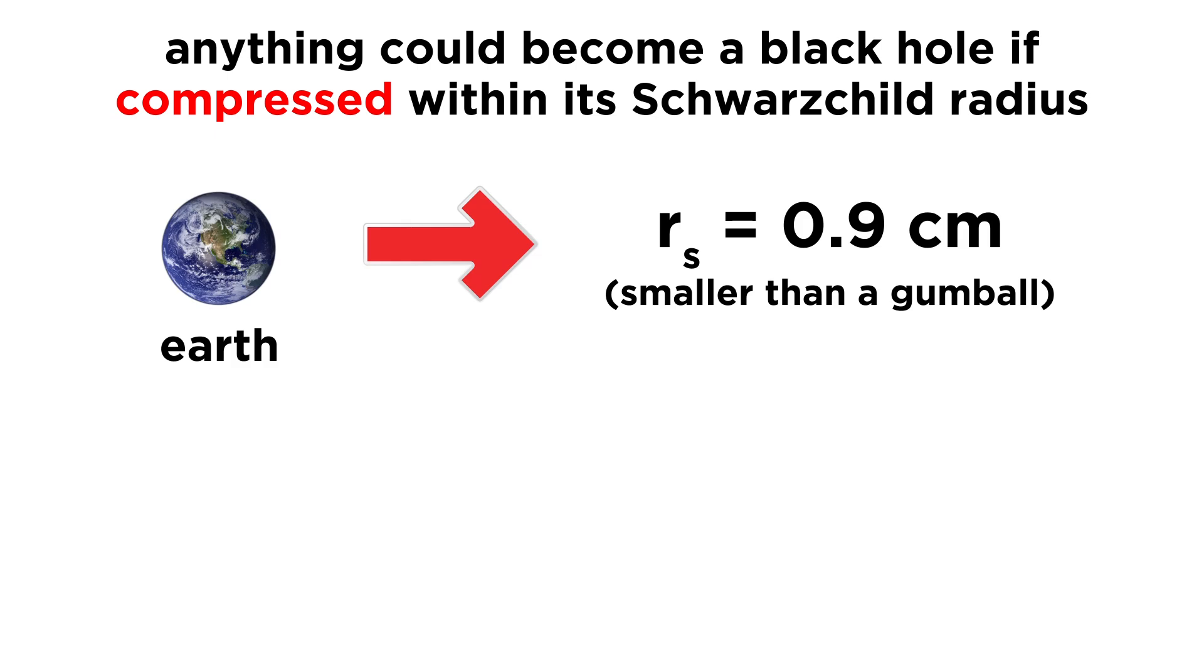For the earth to become a black hole, it would need to have a radius of just under a centimeter. That's all the mass of the entire world, contained within something less than the size of a gumball.